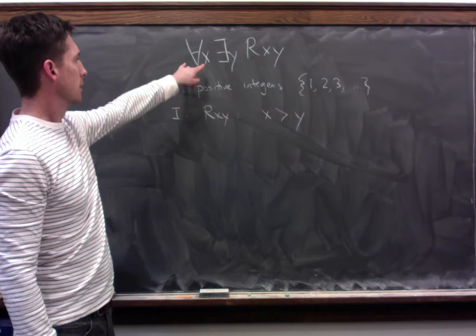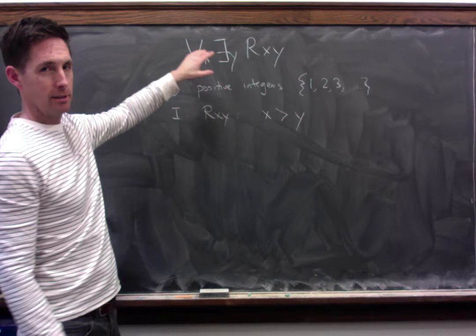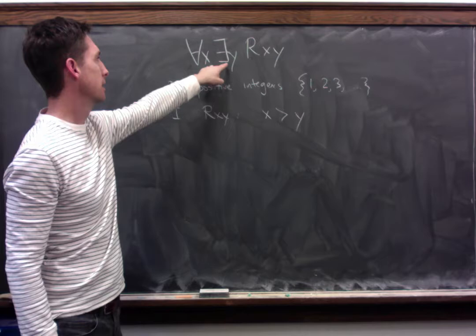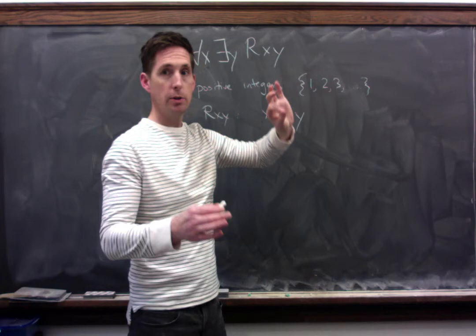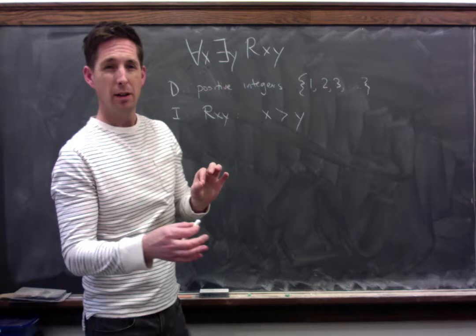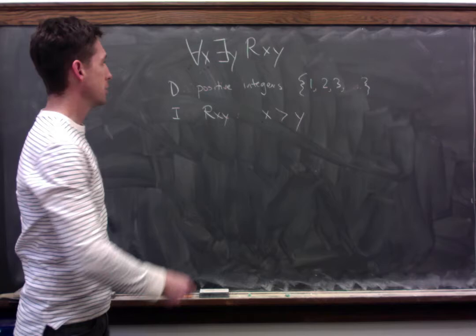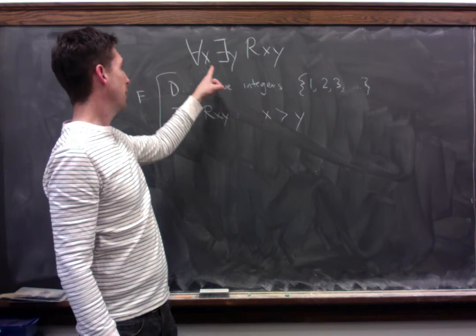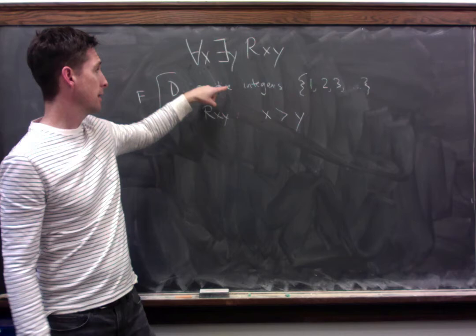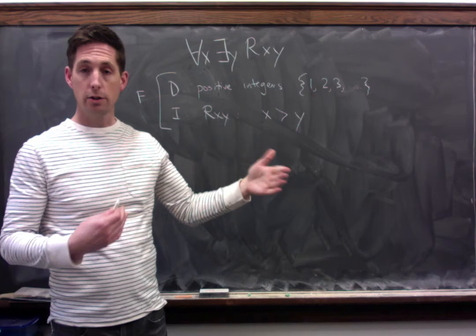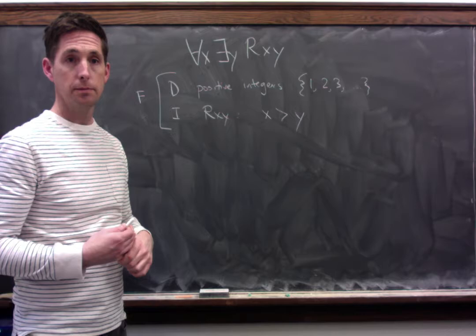Let's think about whether this formula is true or false. It says every positive integer is greater than some positive integer. You might be tempted to think that's true — two is greater than one, three is greater than two, and no matter which number you pick, you can always find some number it's greater than. But in fact, we can find a positive integer that's not greater than even one thing in our domain: the number one. Number one is in our domain, but it's not greater than anything in our domain — not greater than itself, and not greater than any of the larger numbers. So on this interpretation, the formula comes out false.